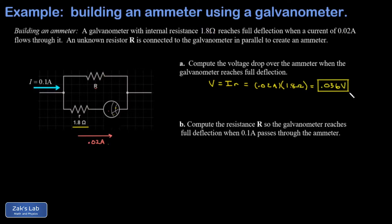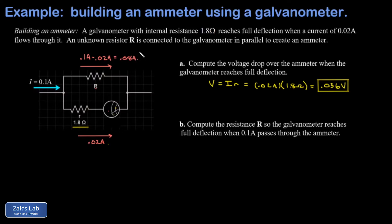In part b, we want to find the resistance R that we put in parallel with the galvanometer branch so that maximum deflection is achieved when there's 0.1 amps total current running through the ammeter circuit. If there's 0.1 amps total current, I immediately know how much is running through the upper branch through R: it's 0.1 amps minus 0.02 amps, which gives me 0.08 amps running through that upper branch.